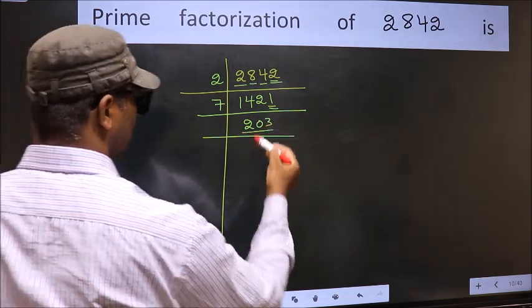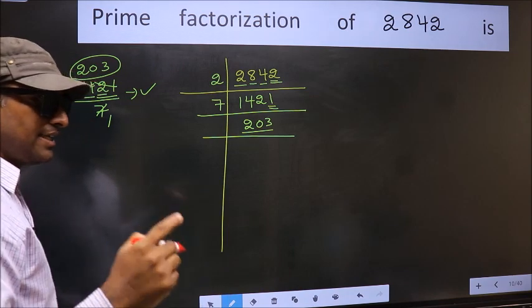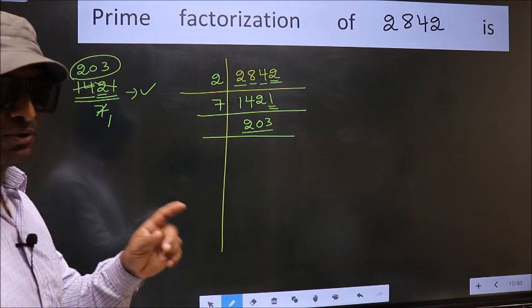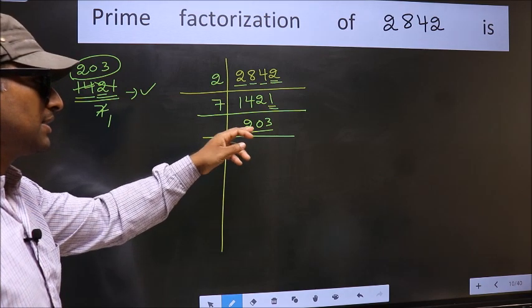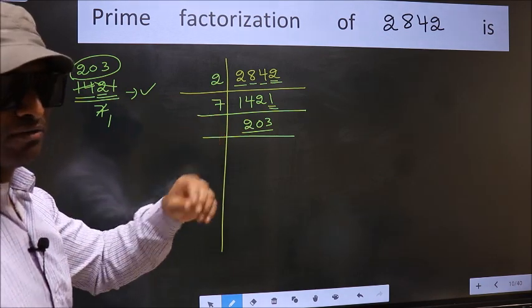Now for 203, we don't need to check its divisibility for 2, 3, and 5. We should start checking its divisibility from 7 onwards.